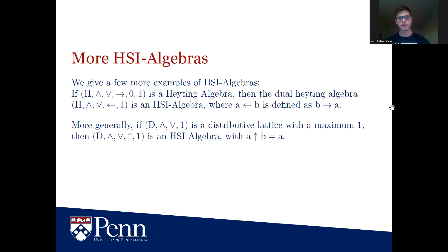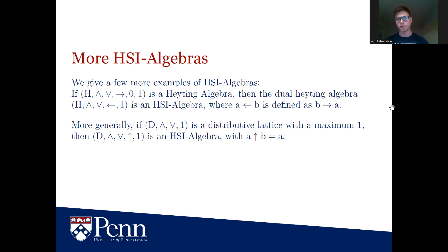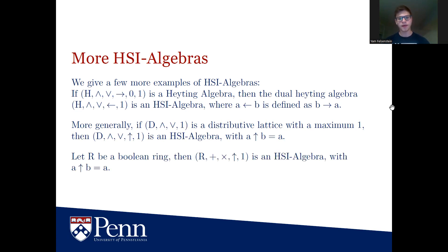If D is a distributive lattice — a partially ordered set with greatest lower bounds and least upper bounds — it is a HSI algebra where exponentiation is defined as A to the power of B simply equals A, projecting onto the first coordinate. Similarly, if R is a Boolean ring — a ring where every element squares to itself, so x squared equals x — then by defining A to the power of B equals A we get another HSI algebra.